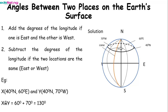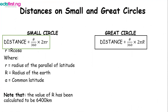Now let's look at distances on small and great circles. We have two formulas. The small circle formula is: distance = (theta / 360) × 2πr, where small r = R cos(alpha). Here, small r is the radius of the parallel of latitude, capital R is the radius of the earth, and alpha is the common latitude. The value of capital R has been calculated by scientists to be 6400 km. The great circle formula is: distance = (theta / 360) × 2πR. The difference between the two formulas is small r versus capital R.